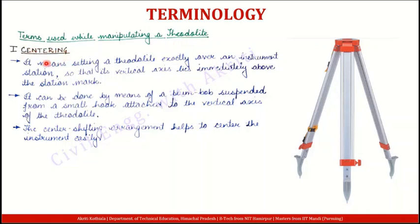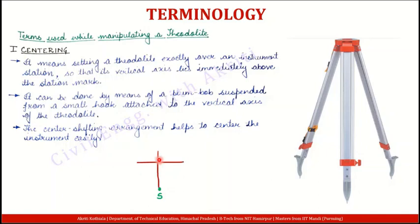Centring — aisi term hain joh aap koi bhi instrument jis mein telescope laga hai jis se aap object ko sight kar raha hai, uske liye use kar saktay hain — jaisi ki auto level, dumpy level, theodolite, total station — sab ki centring kertay hain. To centring ka kya matlab hai: it simply means ki aap ne jo theodolite hai usko is tariqe se place karna hai ki joh ground pe koi station point hai, jiske oopar aapne instrument place karna hai aur jis se aapne reading leeni hai. To aapne instrument ko is tariqe se temporary adjustment karna hai ki joh vertical axis hai aapke instrument ka, woh exactly us station point ke oopar hai.